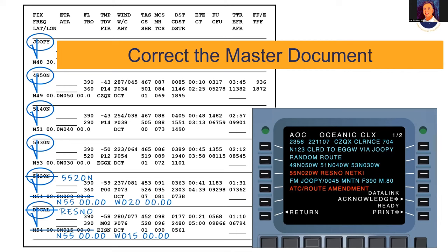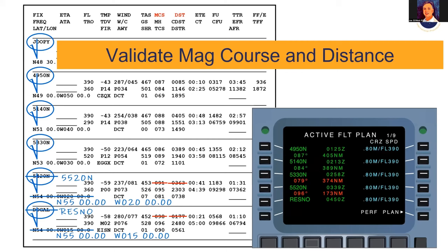A reroute can involve the entire route, or just one or two waypoints. In the North Atlantic, most reroutes involve only one or two waypoints, though an entire reroute is possible. In executing this third critical task — after correcting the FMS and plotting chart — we are required to revalidate the mag course and distance for the two new legs to ensure the route in the FMS is correct.